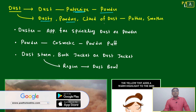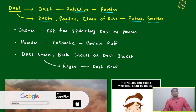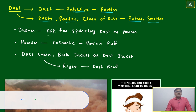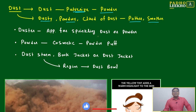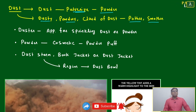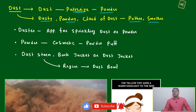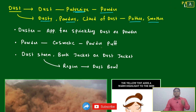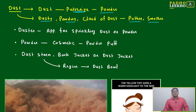Dusty means a powdery cloud of dust. A duster is an apparatus for sprinkling dust or powder — we are using it for teaching purposes. Powder is also used for cosmetic purposes, and the tool which holds the powder is called a powder puff.